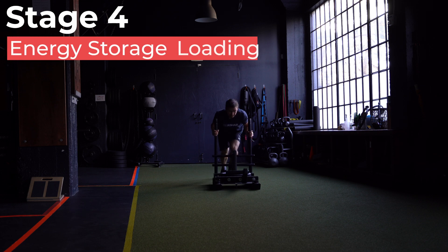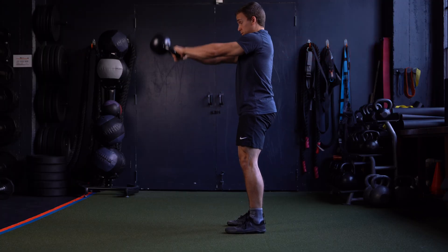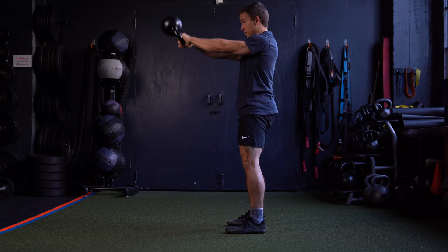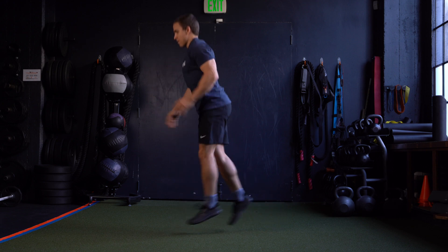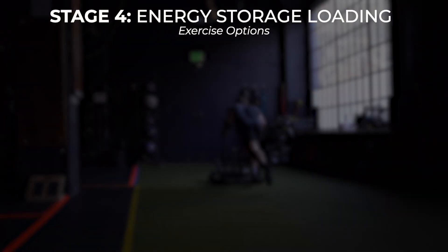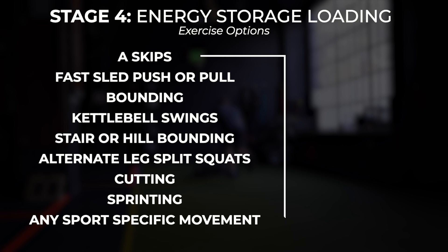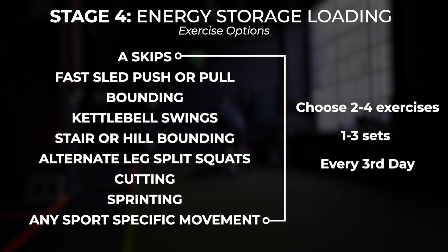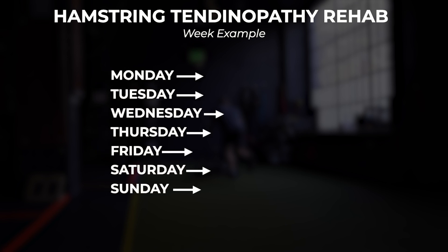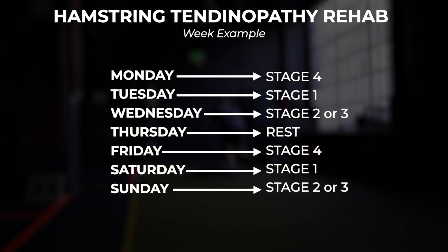Stage 4: energy storage loading. This is only for individuals returning to sport. You have to incorporate higher-level activities, especially ones specific to your sport, to build up capacity to tolerate high loads. Options include A skips, fast sled push or pull, bounding, kettlebell swings, alternate leg split squats, stair or hill bounding, cutting, sprinting, and any sport-specific movements. Pick two to four movements to be performed for one to three sets every third day. For example: Monday — Stage 4 exercises; Tuesday — isometrics; Wednesday — Stage 2 or 3 exercises; Thursday — rest; then repeat the cycle.